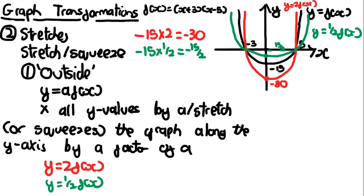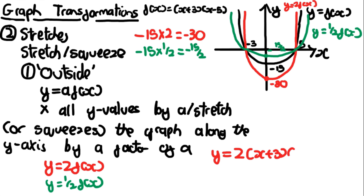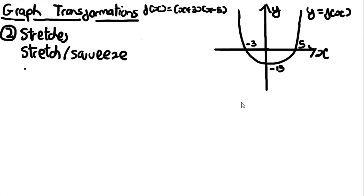You still need to get the shape right — for the stretched graph the turning point is still placed correctly. You just need to stretch the shape by 2. In terms of the equation, it multiplies the whole thing by a, which makes sense because y = af(x). For y = 2f(x), the equation becomes y = 2(x+3)(x-5).